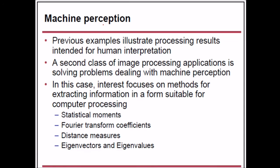Machine perception is a second class of image processing application. While previous examples illustrated processing intended for human interpretation, machine perception focuses on methods for extracting information in a form suitable for computer processing. Just as human beings use eyes to see and a brain to compute decisions, machines need structured information. This includes statistical moments, Fourier transform coefficients, distance measures, eigenvectors, and eigenvalues.